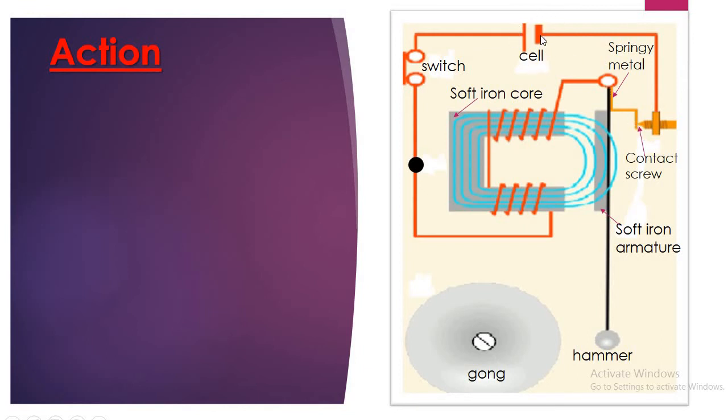We have the cell, which provides the electric current. We have a switch, which completes the circuit. Then, a soft iron core on which an insulated wire is wound.